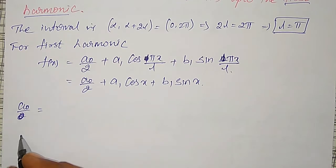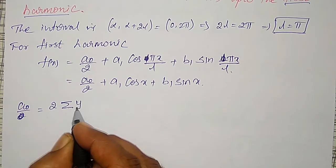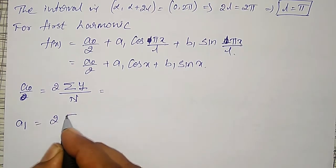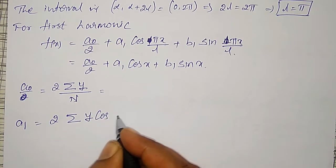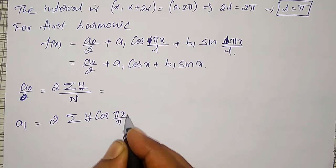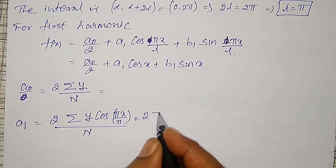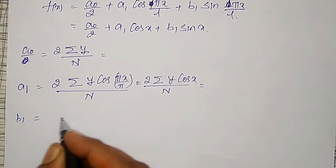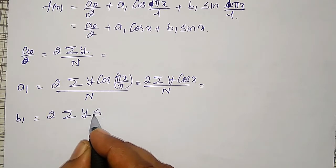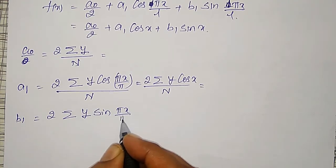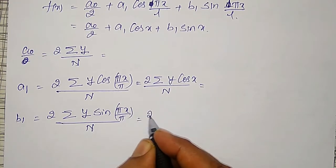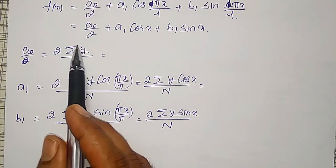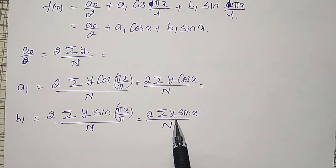By practical harmonic analysis, a_naught is defined to be 2 times summation y divided by capital N. Then a1 is defined to be 2 times summation y into cos(nπx/l), n is 1, l is π, which is the whole divided by N. That is equal to 2 times summation y into cos x divided by N. Like that, b1 is given by 2 times summation y into sin(nπx/l), n equal to 1, whole divided by N. That is 2 times summation y into sin x, whole divided by N.